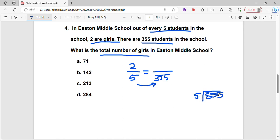5 goes into 35 7 times. 7 times 5 is 35. And then we subtract. We bring down the 5. 5 goes into 5 1 times. So we would have to be multiplying by 71, right? So 5 times 71 in order to get 355 students. So then we would also do the same thing to the top, times 71.